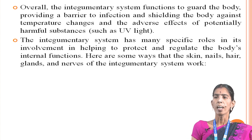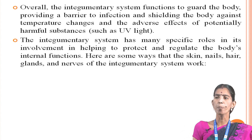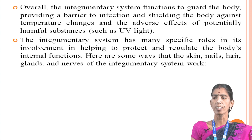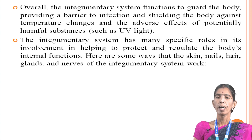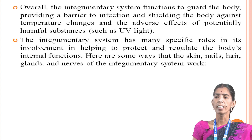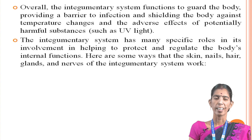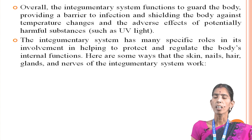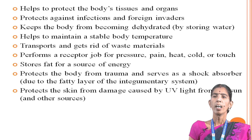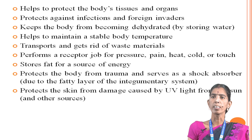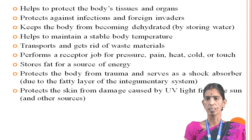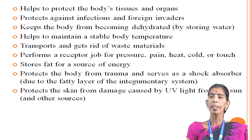The integumentary system has many specific roles in helping to protect and regulate the body's internal functions. Here are some ways that the skin, nails, hair, glands and nerves of the integumentary system work: it helps to protect the body's tissues and organs, protects against infections and foreign invaders, and keeps the body from becoming dehydrated by storing water.